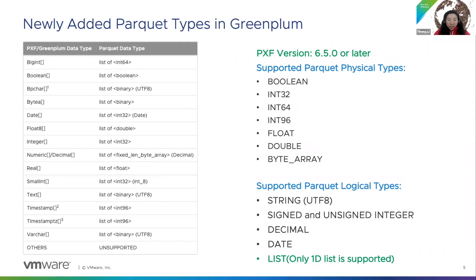Now, in our recent release 6.5.0, PXF extends the Parquet primitive support to the corresponding 1D list support. Here is the mapping between Greenplum list types and Parquet list types.